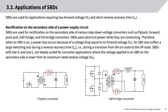SBDs are used for rectification on the secondary side of various step-down voltage converters such as flyback, forward, push-pull, half-bridge, and full-bridge converters. SBDs pass electrical power while conducting, so when an SBD is on, a power loss occurs due to a voltage drop equal to its forward voltage VF.